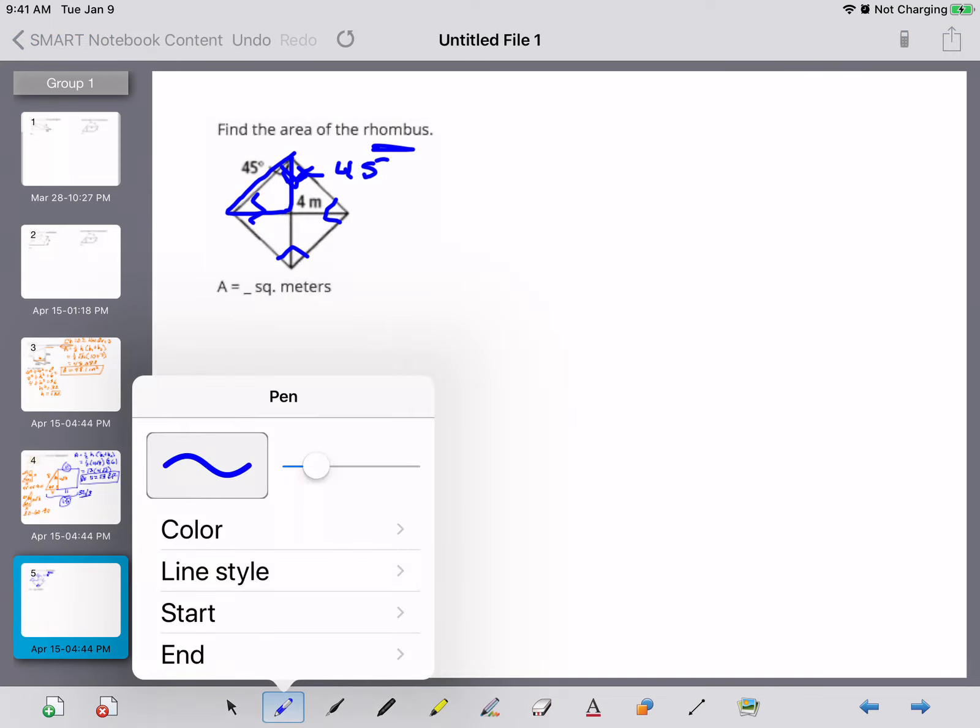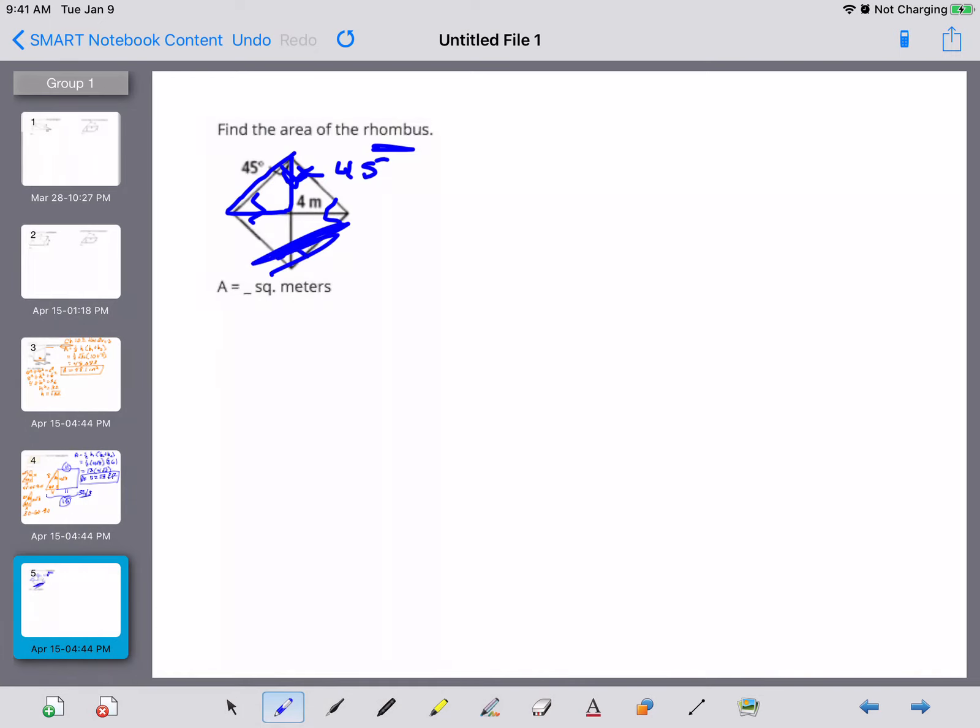And because the diagonals of a rhombus bisect each other, we're going to clean this up a little bit. So we know that this rhombus is a square. Well I know that a square has all the properties of a rectangle and the diagonals are the same length. So half of the same length all of them are congruent. So right now I know the lengths of these diagonals are all four. So that means my diagonal one is eight and my diagonal two is also eight.